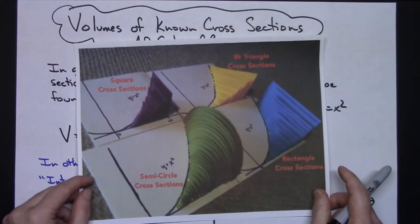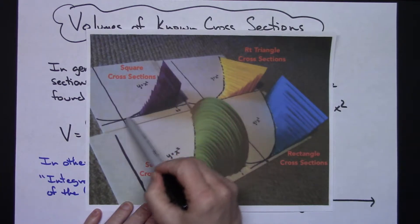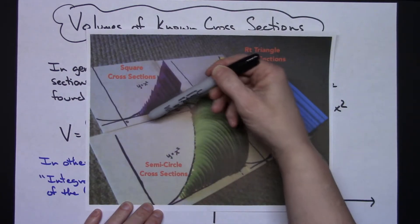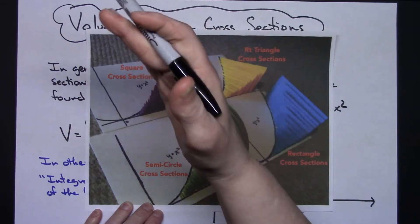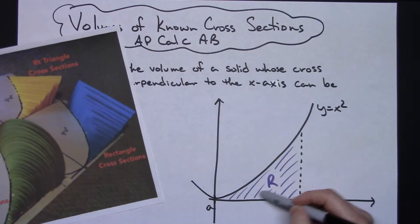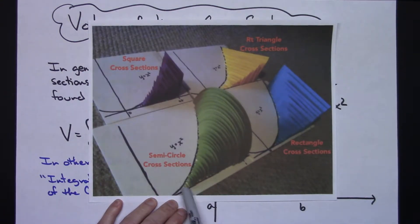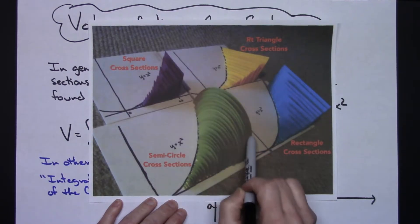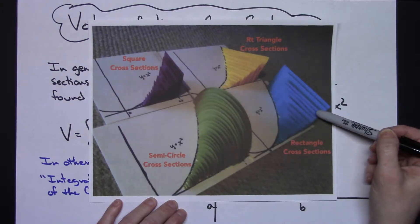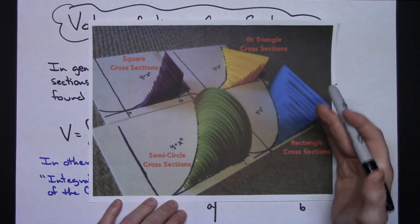To better see that visually in 3D: I've got this y equals x squared curve, and in this picture each one of the cross sections are squares. As you can see, the sizes of the squares change but they are perpendicular to the x-axis and the base is that region R. If they look like semicircles, you would just have a bunch of cross sections that are all semicircles of different sizes depending on how far the curve is from the x-axis. This also shows rectangular and right triangle cross sections.